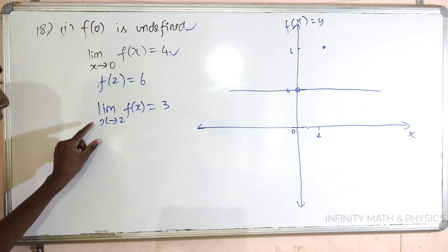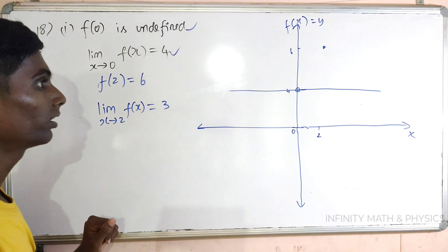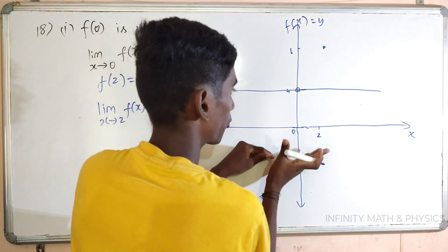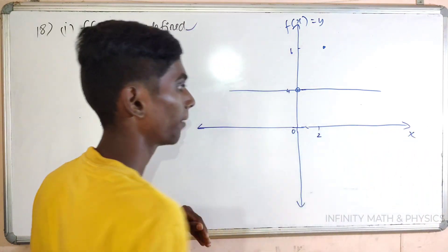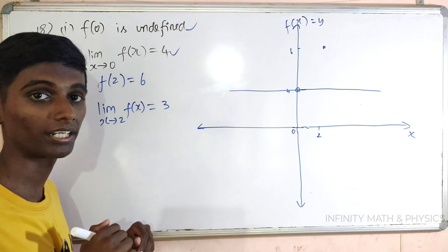Limit when x tends to 2, f of x is equal to 3. So let's look at the left side and the right side — there are 3 values.